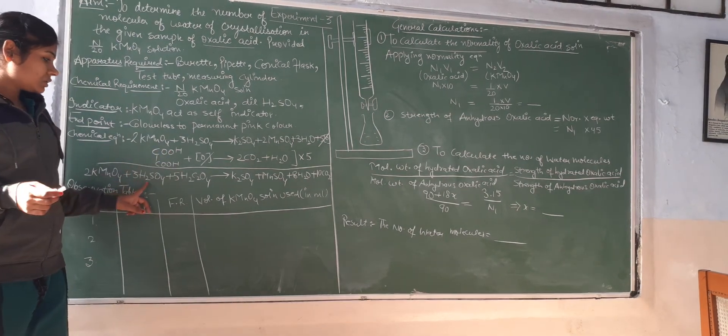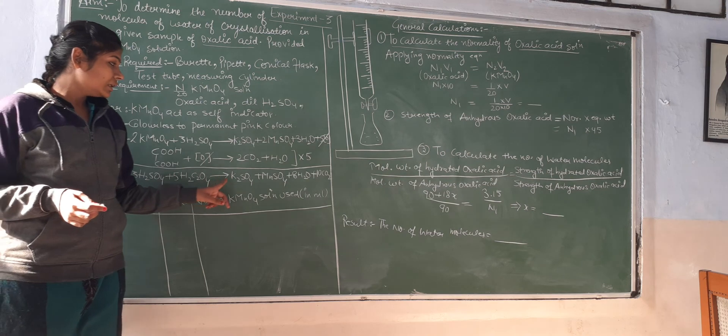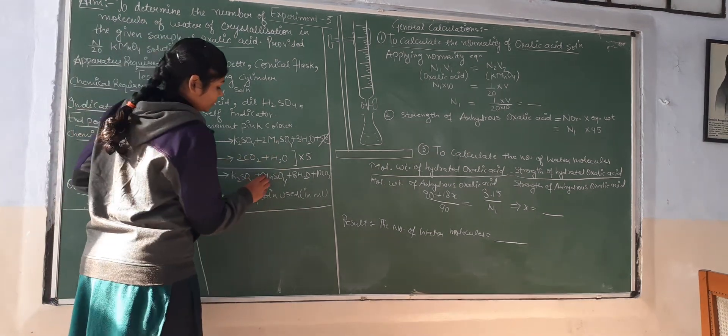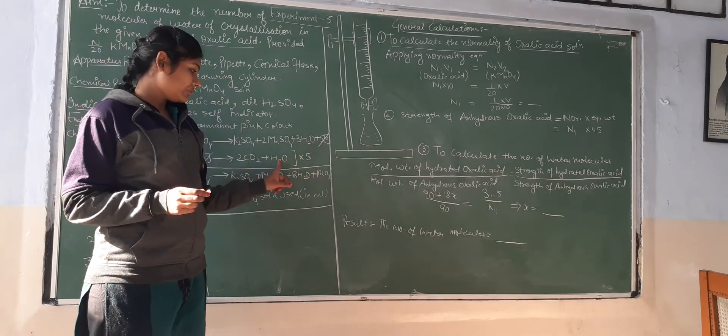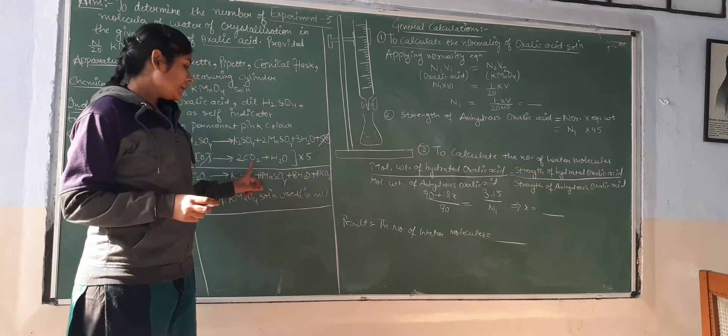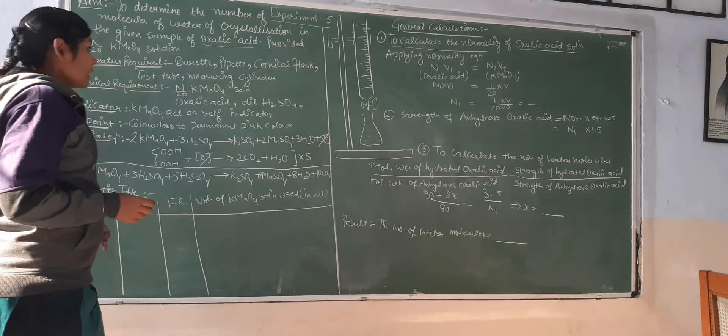2 KMnO4 plus 3 H2SO4, and we multiply by 5 to get K2SO4 plus 2 MnSO4 plus 8 H2O. We have 5 water molecules total, and 2 into 5 gives 10 CO2.